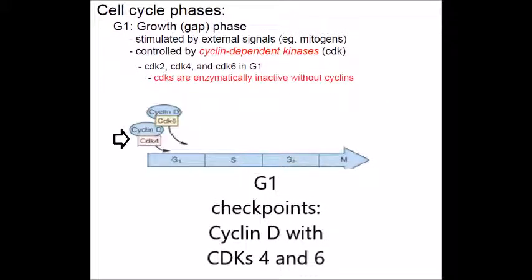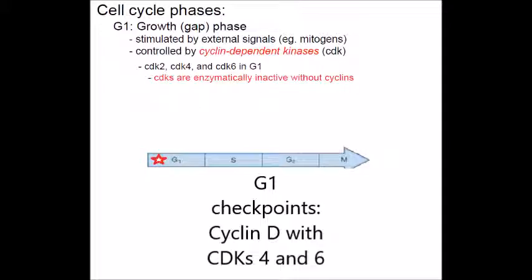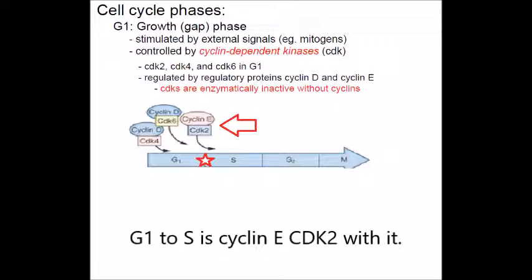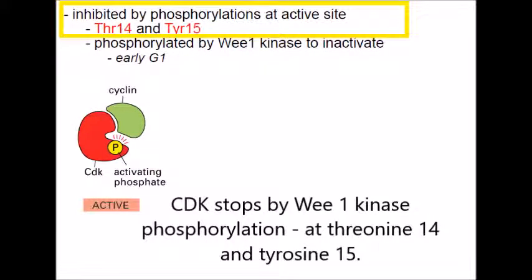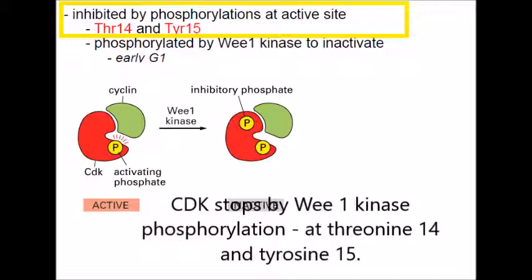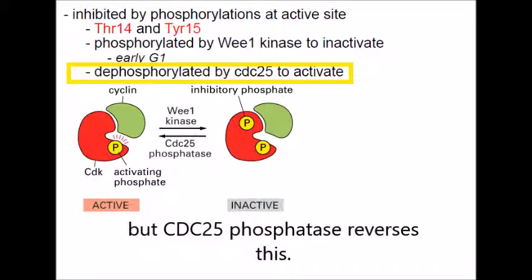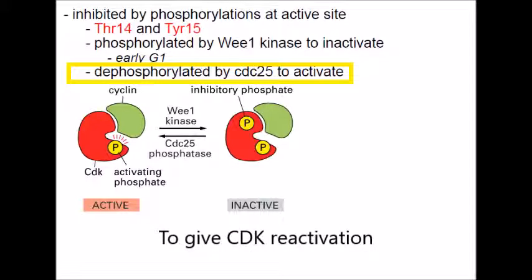G1 checkpoint: cyclin D with CDK 4 and 6. G1 to S is cyclin E with CDK 2. CDK is stopped by Wee1 kinase phosphorylation at residues 14 and 15, but CDC25 phosphatase dephosphorylates those sites to give CDK reactivation.